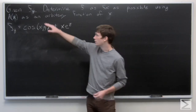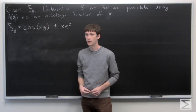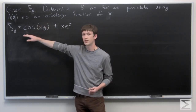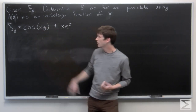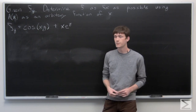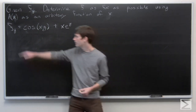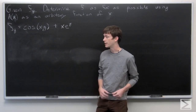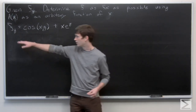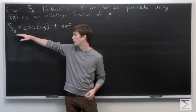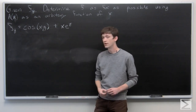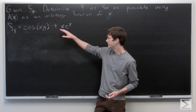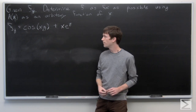In this problem, we're given the partial derivative of a function f with respect to y. We're asked to determine f as far as possible using a(x) as an arbitrary function of x. We're given that our partial derivative, f sub y, is equal to cosine of the quantity x times y, plus x times e to the y.